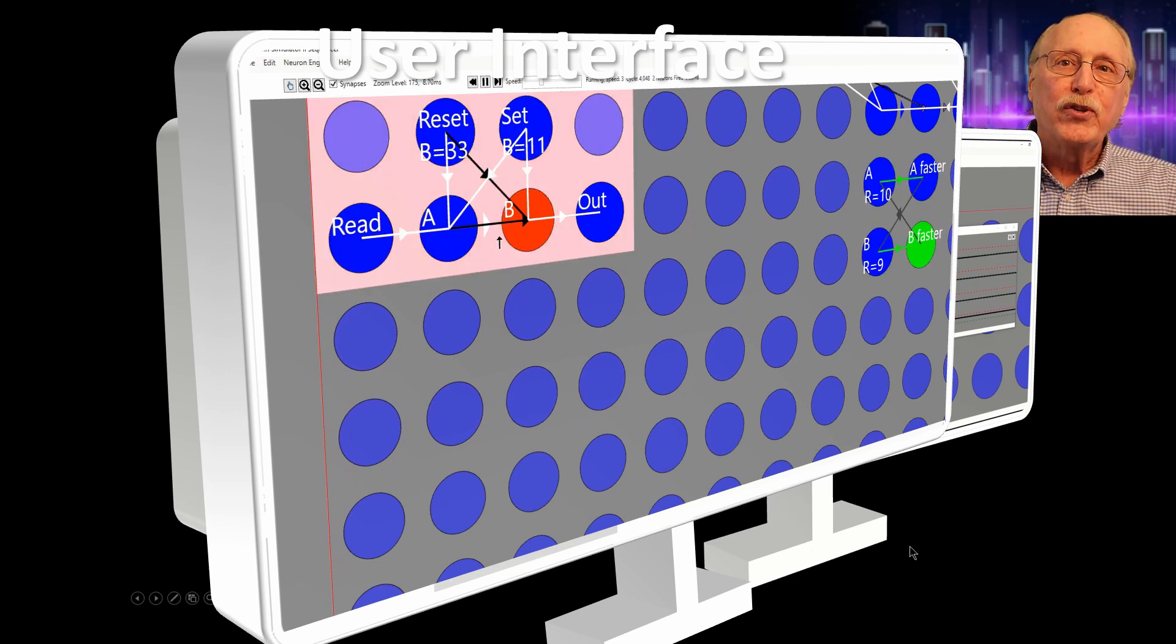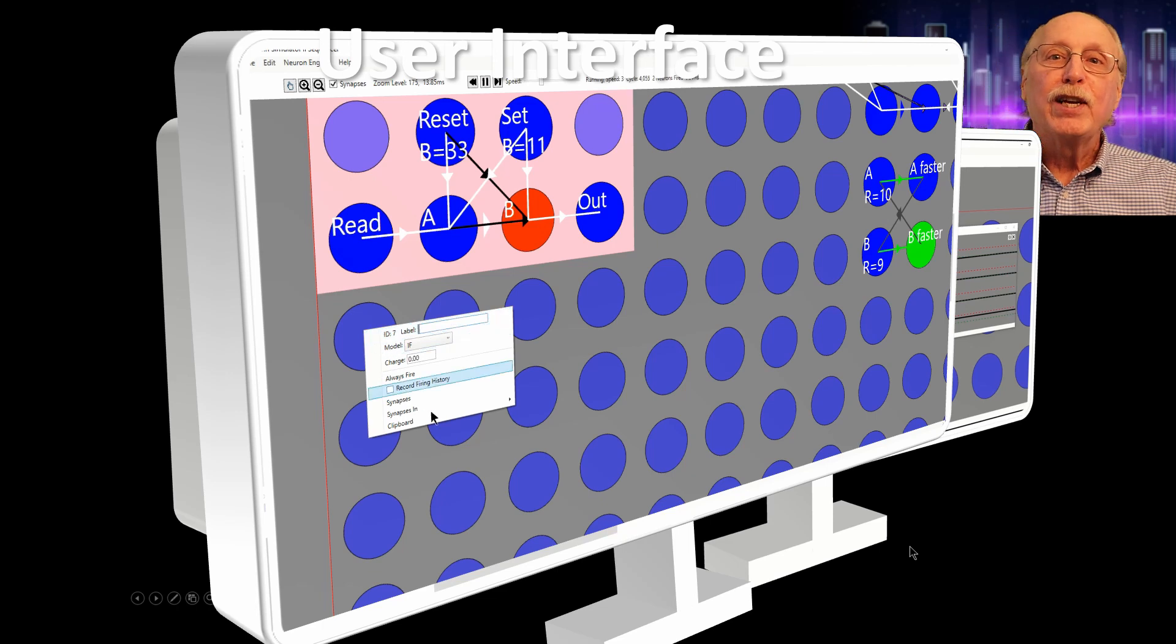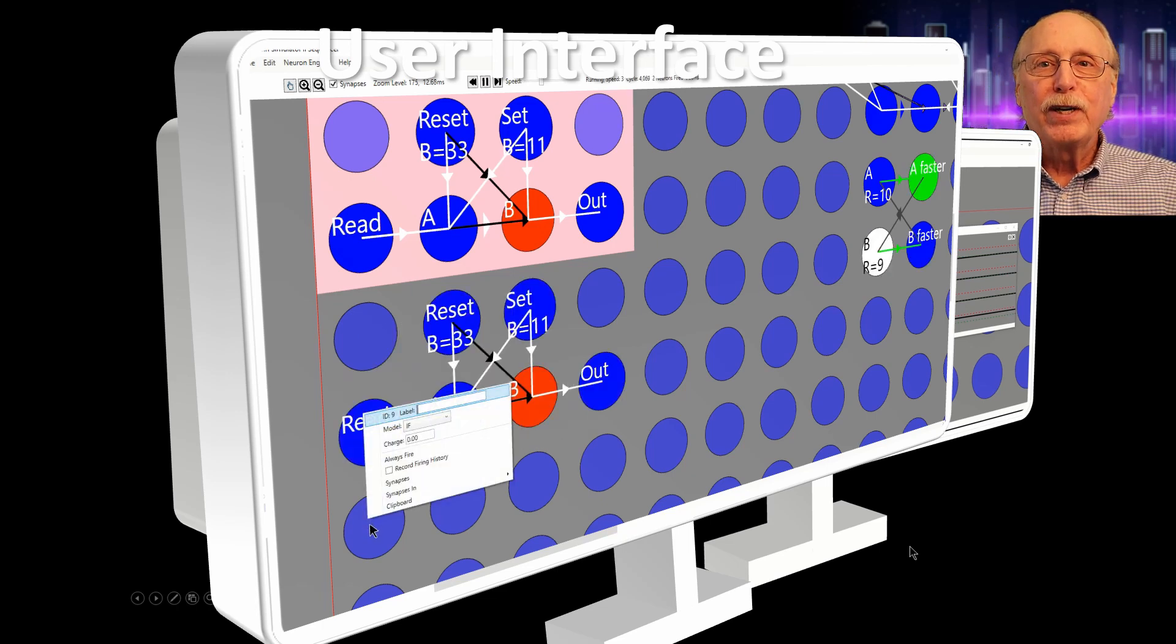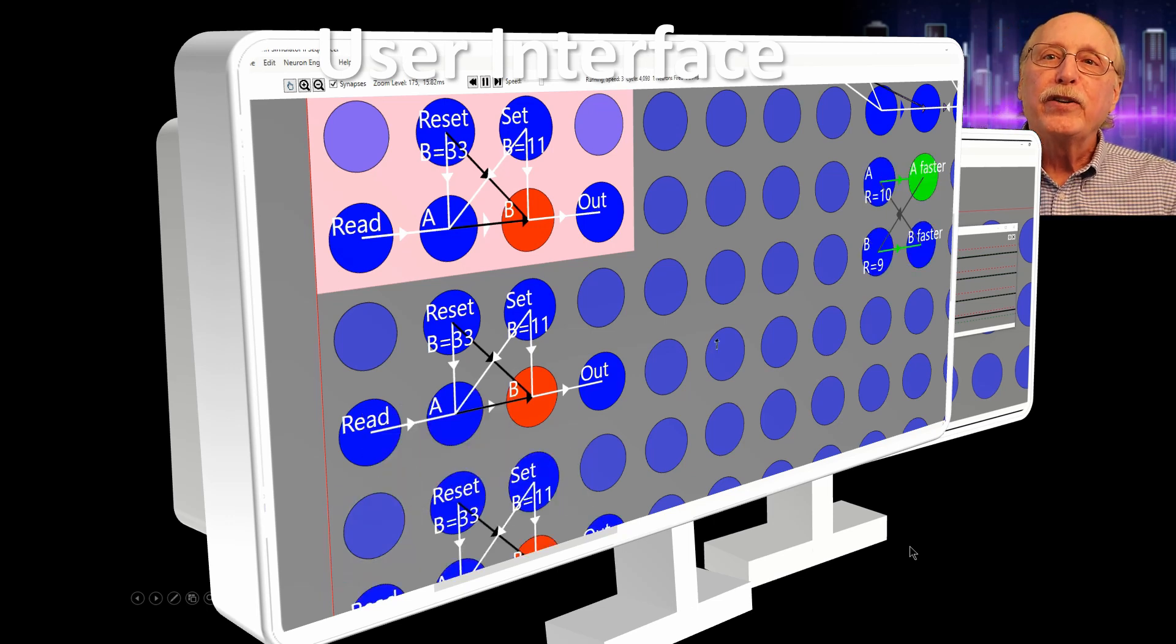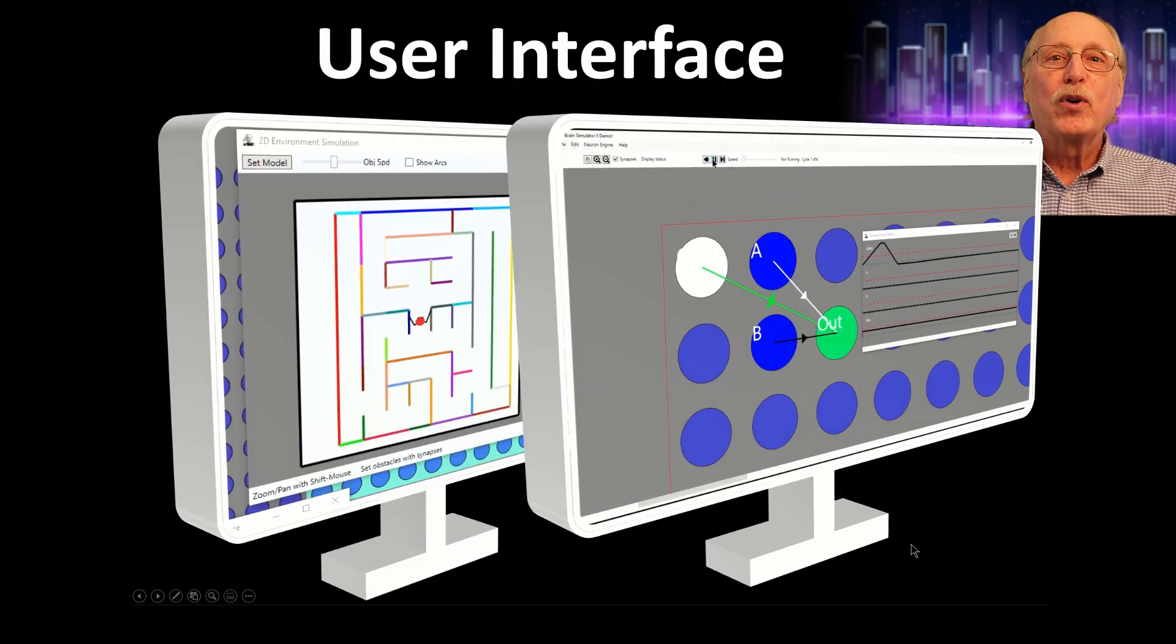Once you've built simple neural circuits, the user interface lets you copy them and paste them to create powerful functionality. The user interface is also your key to understanding how neurons can work together to implement AGI.